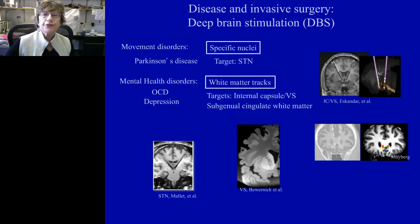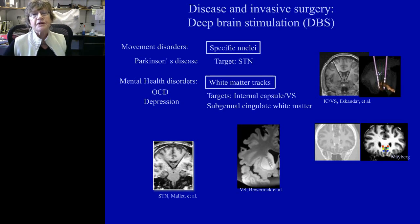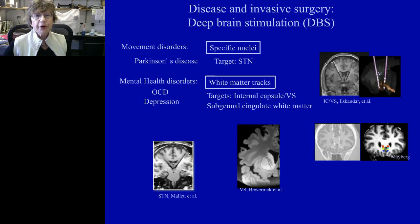Now we're going to switch to deep brain stimulation. This is not only an interesting therapeutic approach, but I also want to use it as a way of emphasizing the importance of understanding connectivity. There are a couple of different targets used worldwide. Probably the most prominent is the subthalamic nucleus for Parkinson's disease. This target is also now being explored for obsessive-compulsive disorder in the more medial parts of the target, mostly in some of the European experimental groups.